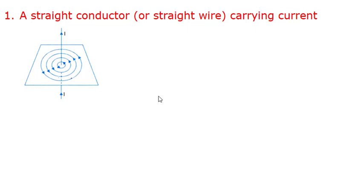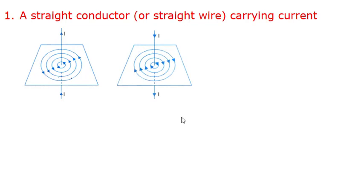Whenever current is flowing in a straight conductor it creates a magnetic field which are concentric circles. The strength of magnetic field depends on the current passing through the conductor and the distance from the conductor. It is directly proportional to the current passing through the conductor — if we increase the current then the magnetic field will be strong. And if we move away from the conductor then the magnetic field will decrease; that is, the magnetic field is inversely proportional to distance from the conductor. When we flow current in the downward direction we find that the magnetic field is in the clockwise direction. With the help of a magnetic needle, the north pole of the magnetic needle will show the direction of magnetic field, so we can plot the direction of magnetic fields.